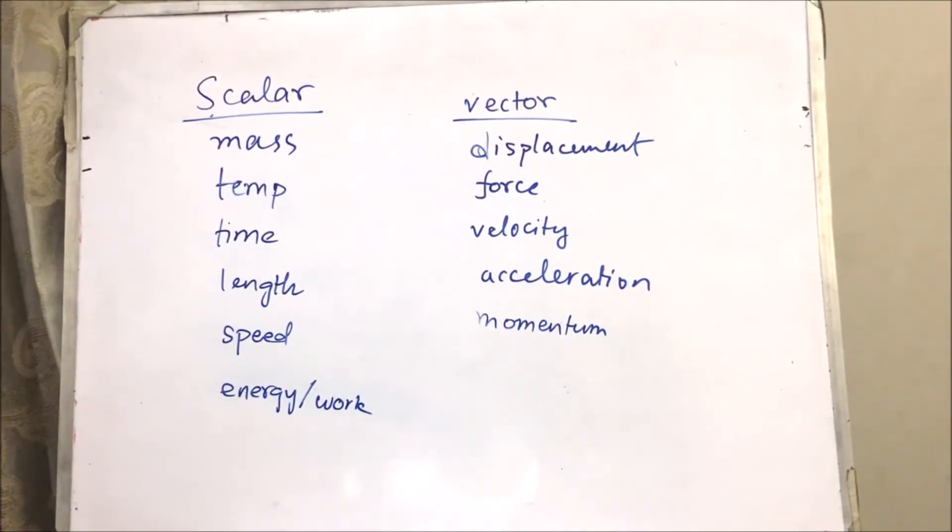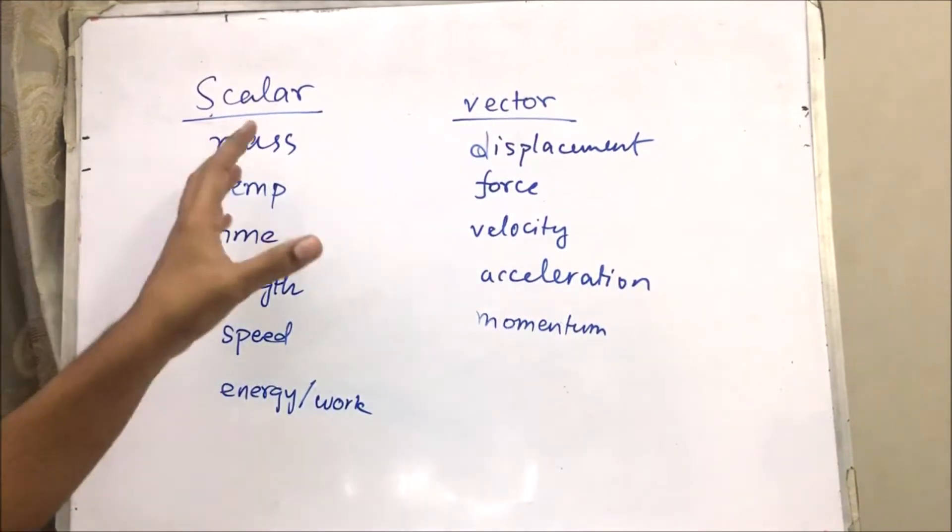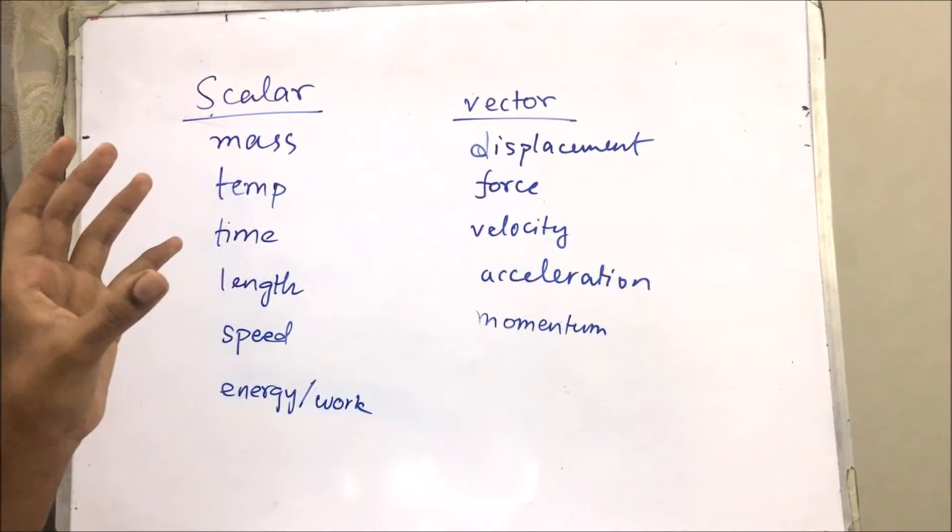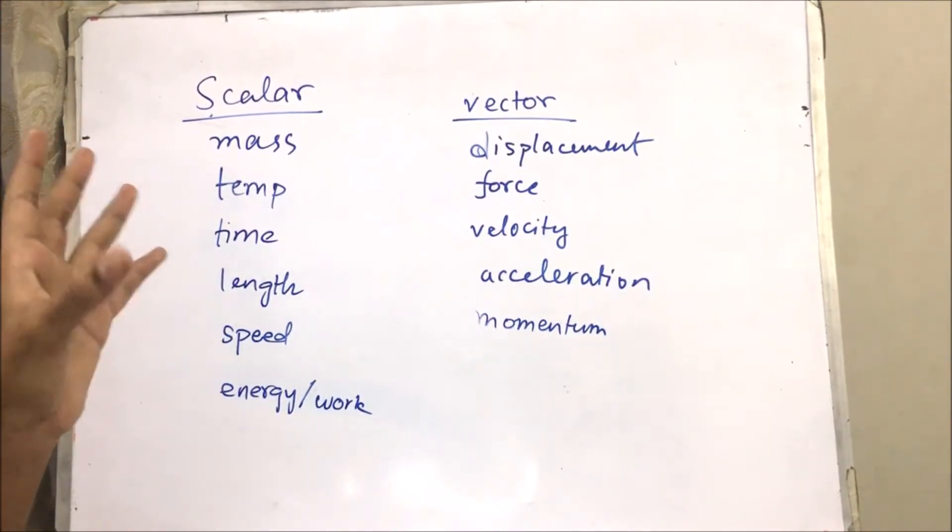So, when we start revising physics, one of the first things that we have to see is the difference between a scalar and a vector quantity. We know that scalar quantities have size or dimension. They don't have directions.